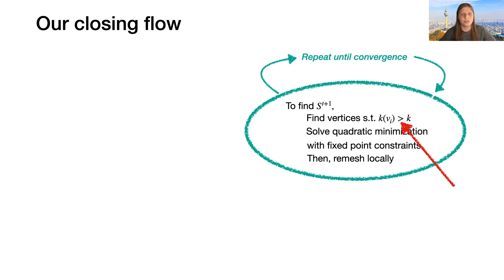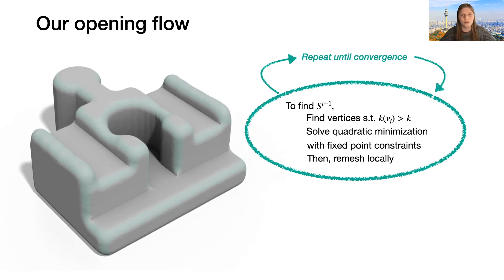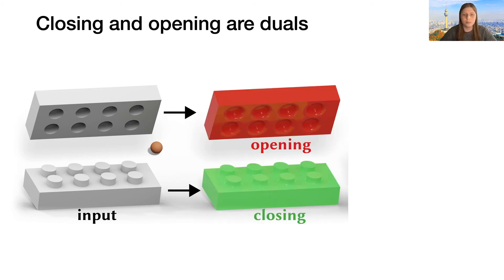Like I said, we focused on the closing during this talk, but replicating the opening operation amounts to just changing one single sign in our formulation. We can see our opening flow running in this simple example. The closing and the opening are dual operations, and so are our opening and closing flows. If we run each of them on each of these interlocking pieces, then the outputs still fit into each other.